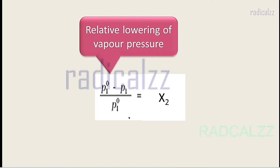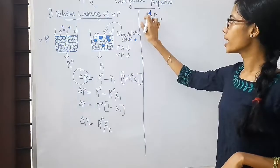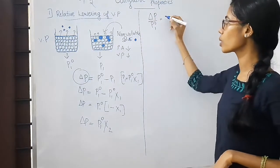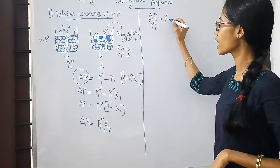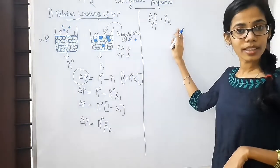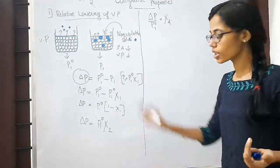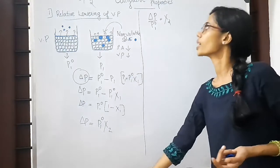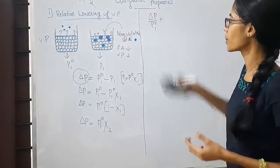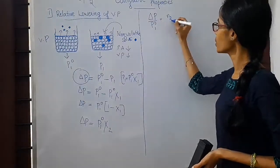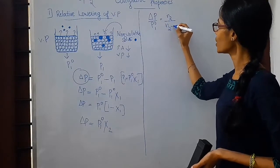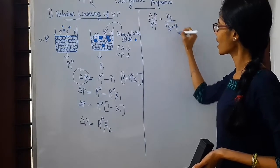So the relative lowering of vapor pressure is equal to the mole fraction of the second component, chi2. Chi2 is equal to N2 divided by (N2 plus N1), where N2 is the moles of solute and N1 is the moles of solvent.